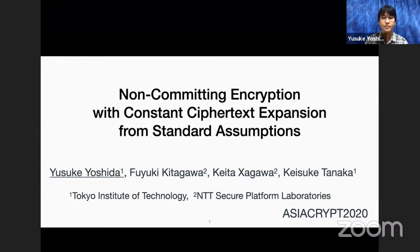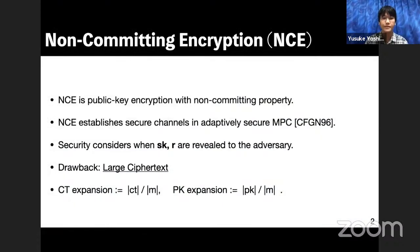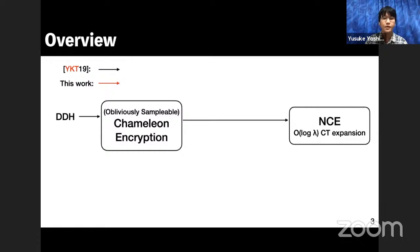This talk is about non-committing encryption, in short NCE. Non-committing encryption is a public encryption scheme with a special security property. We can use it to establish secure channels in adaptively secure multi-party computation protocols, where the adversary corrupts parties adaptively and obtains secret key and randomness of public key encryption used in the protocol. In exchange for achieving such security property, non-committing encryption has a large ciphertext. We focus on ciphertext expansion, which is the ratio of ciphertext length and length of message. Public key expansion is defined in a similar way.